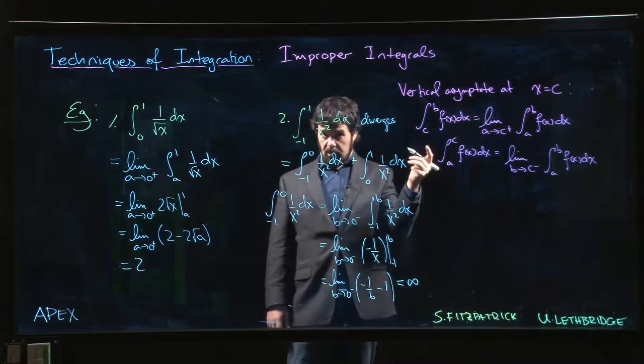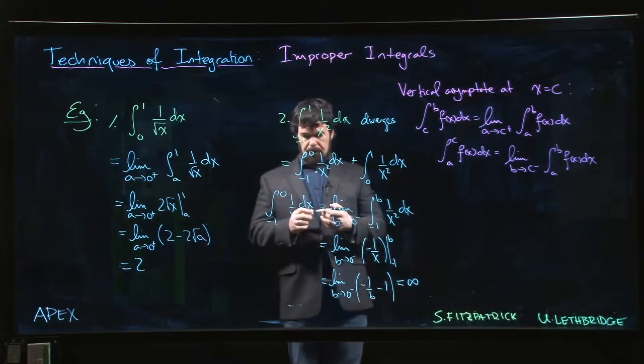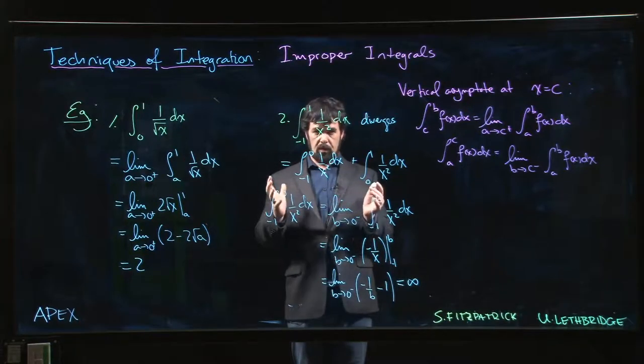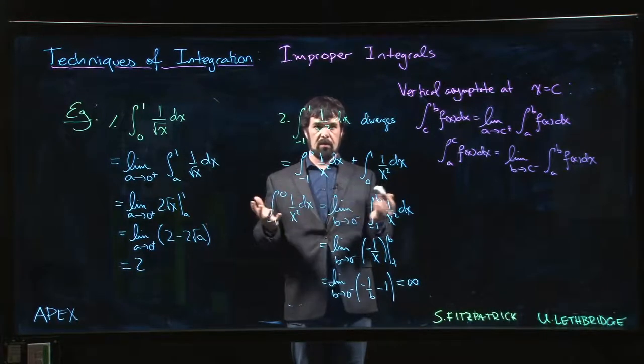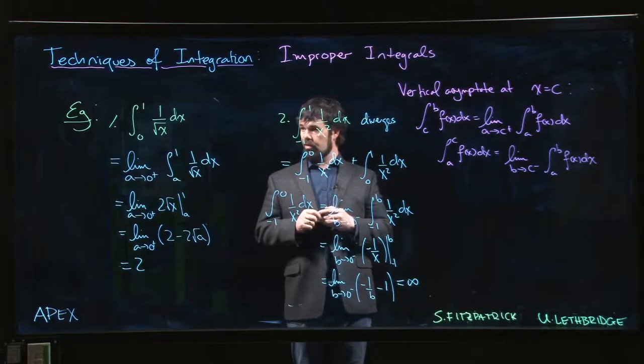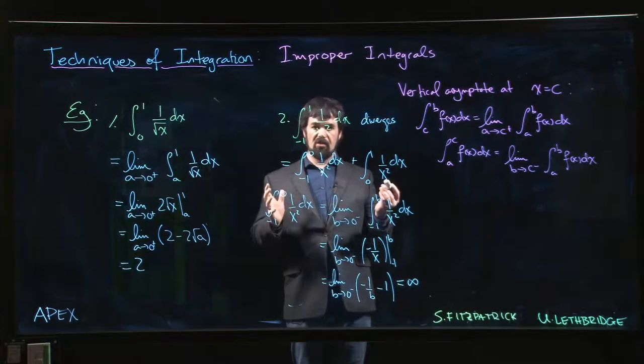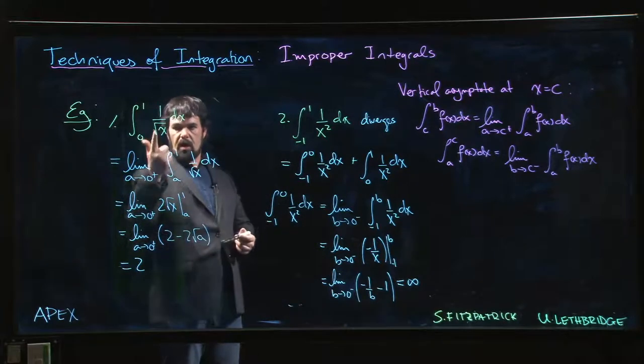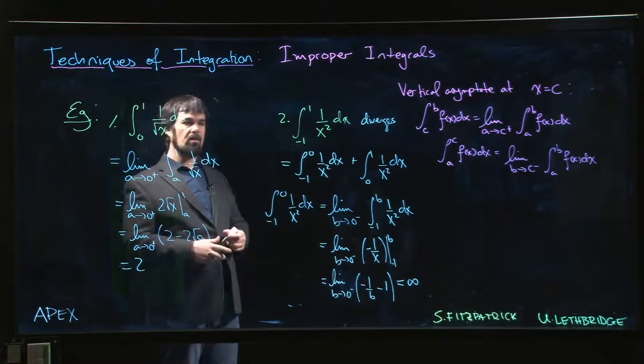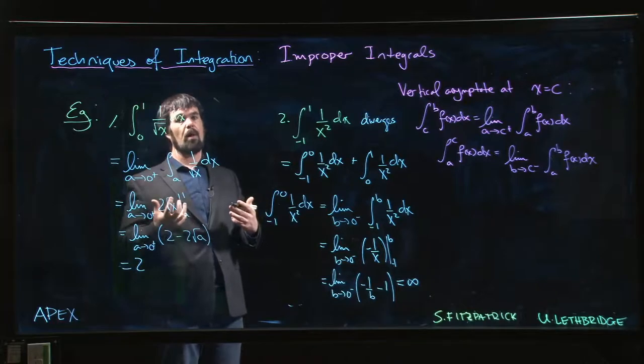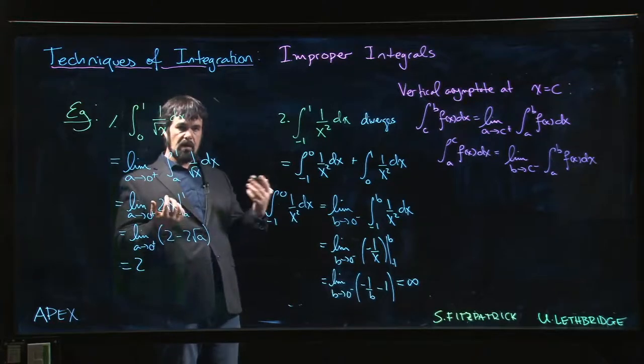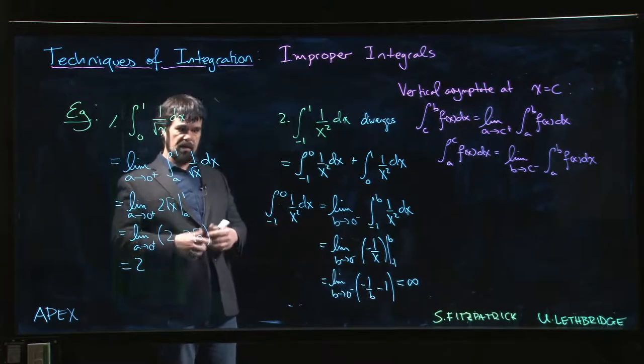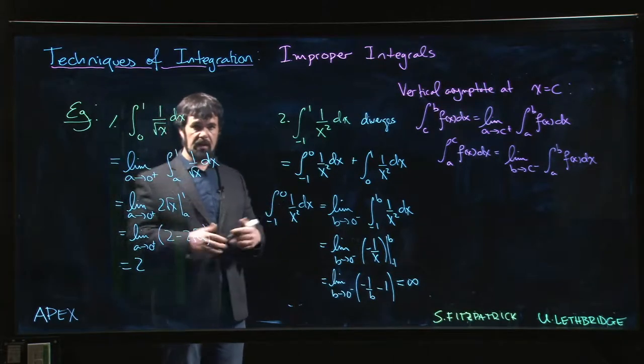So that's how you handle integrals where there's a vertical asymptote somewhere on the region of integration for your function. Next up we're going to look at what you do when you don't necessarily know how to find an antiderivative, but you still need to decide whether or not an improper integral converges. So we'll look at some methods for deciding on convergence versus divergence that don't necessarily involve evaluating the integral.